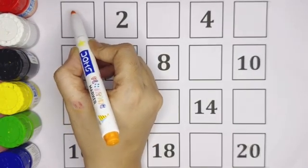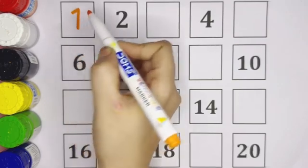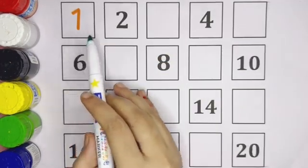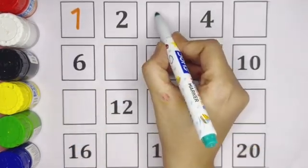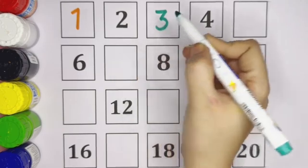One, this is number one. Two. Now the missing number is three, number three.